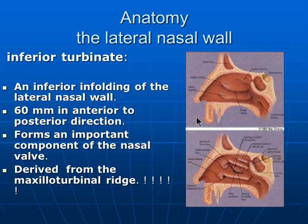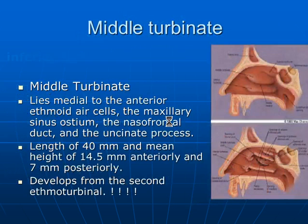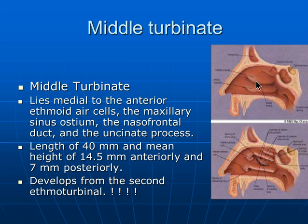The inferior turbinate is embryologically derived from the mesoturbinal bridge. The middle turbinate is by far the most important functional part related to the sinuses. It lies medial to the anterior ethmoid air cells. The maxillary sinus ostium, the nasofrontal duct, and the uncinate process all lie lateral to the middle turbinate. It is shorter than the inferior turbinate, measuring about 40 mm in length and 14.5 mm in height anteriorly, narrowing to about 7 mm posteriorly.